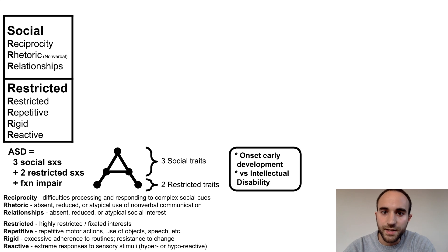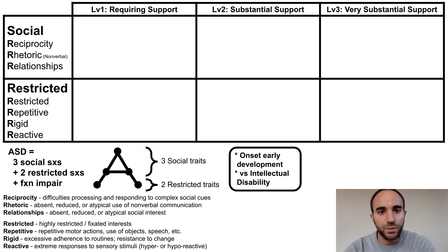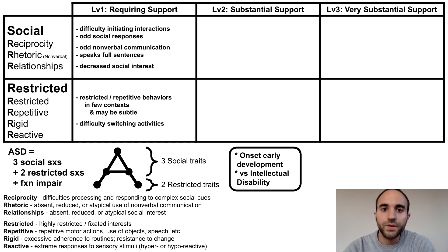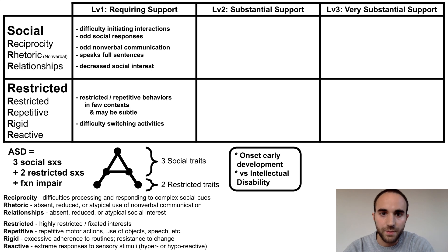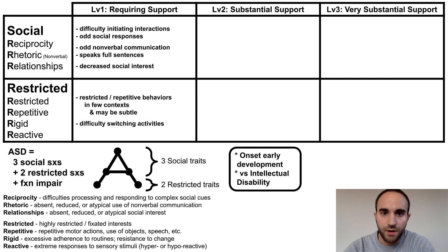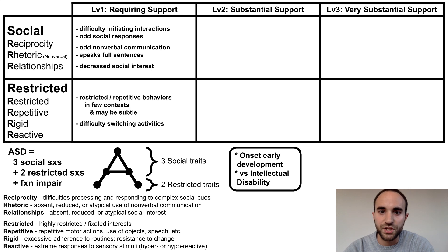There are three formal severity levels based on the patient's required level of external support. In the lowest severity level, requiring support, the patient may have difficulty initiating social interactions or have odd responses to social situations. They may speak in full sentences but use odd or atypical gestures or body language. Restricted or repetitive behaviors may only appear in a few contexts and may be subtle, with mild difficulty switching activities.